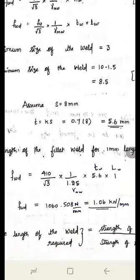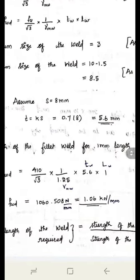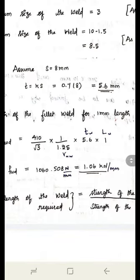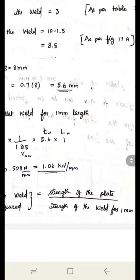Substituting all values into the equation for weld strength per 1 mm length: f_u = 410 MPa (FE 410 grade), divided by √3, multiplied by 1/γ_Mw. Since welding is done at the shop, γ_Mw = 1.25 (from Table 5, page 30). With a length of 1 mm and effective throat thickness of 5.6 mm, the strength of the weld per 1 mm length = 1060.508 N/mm.